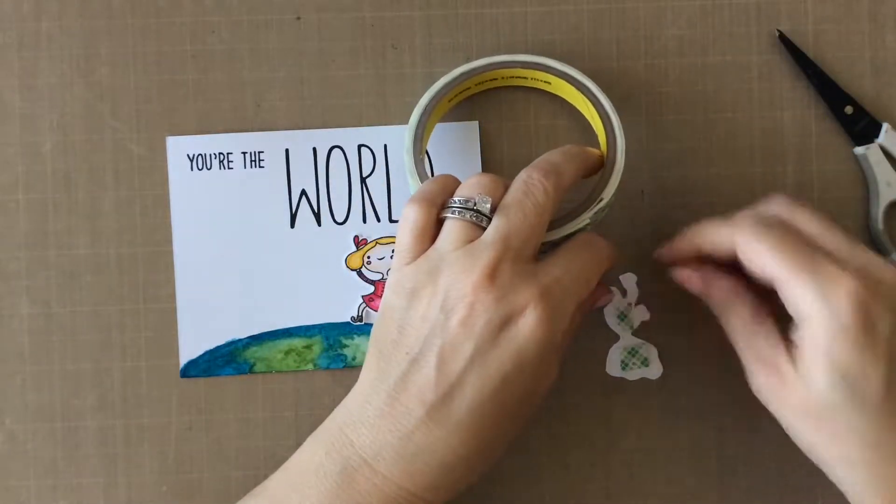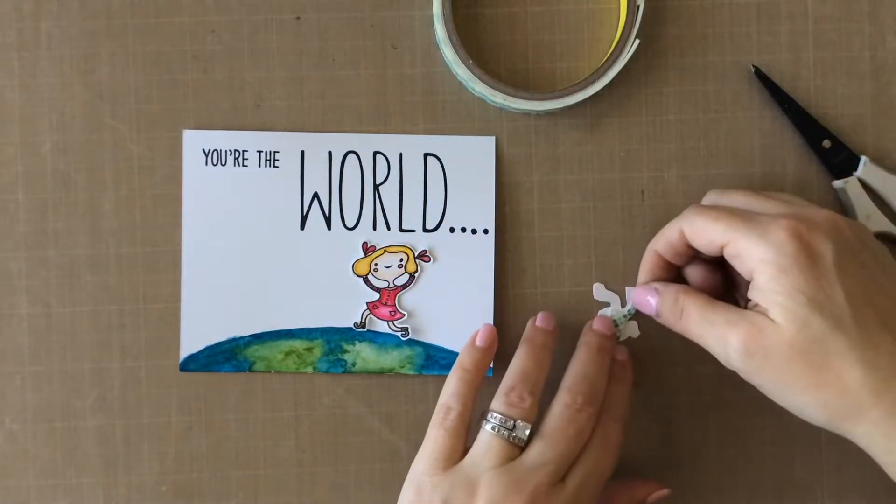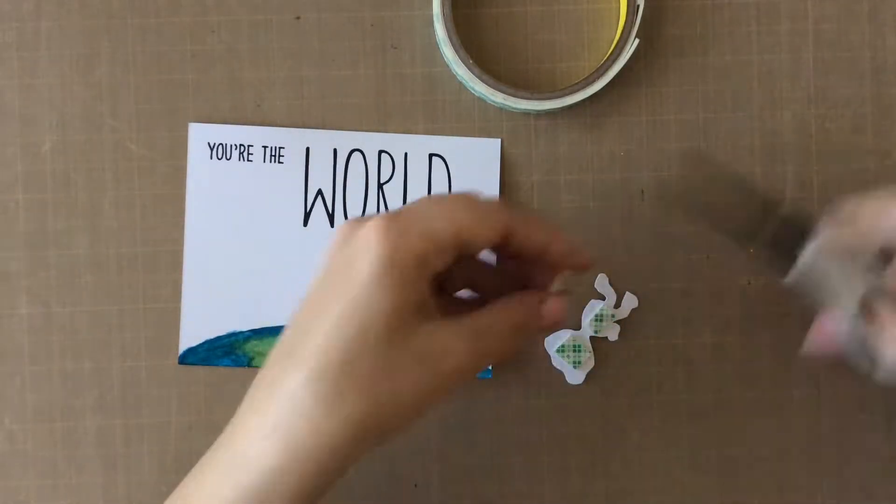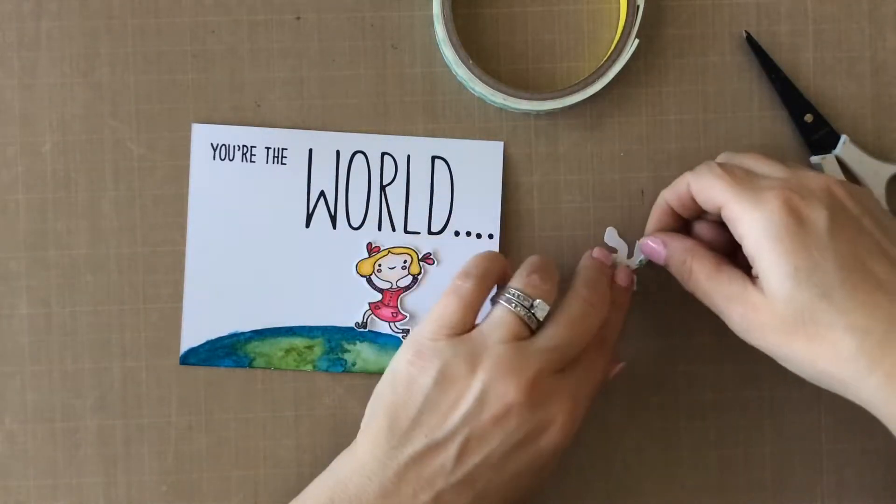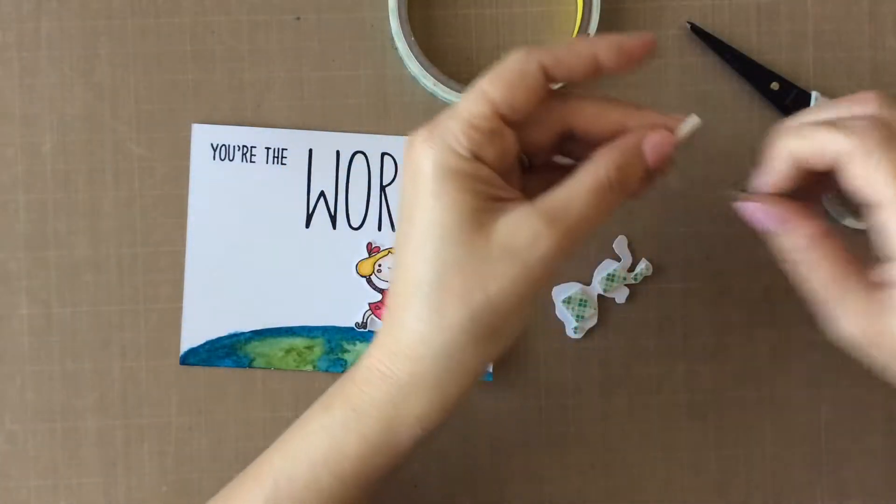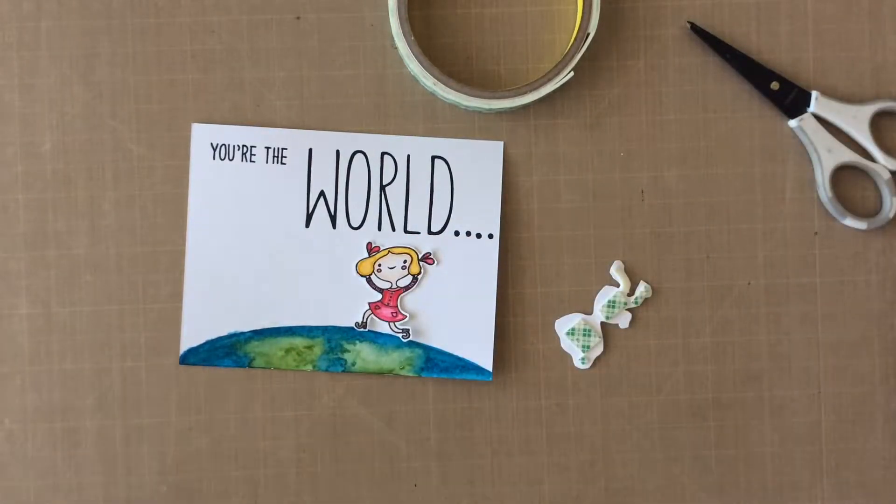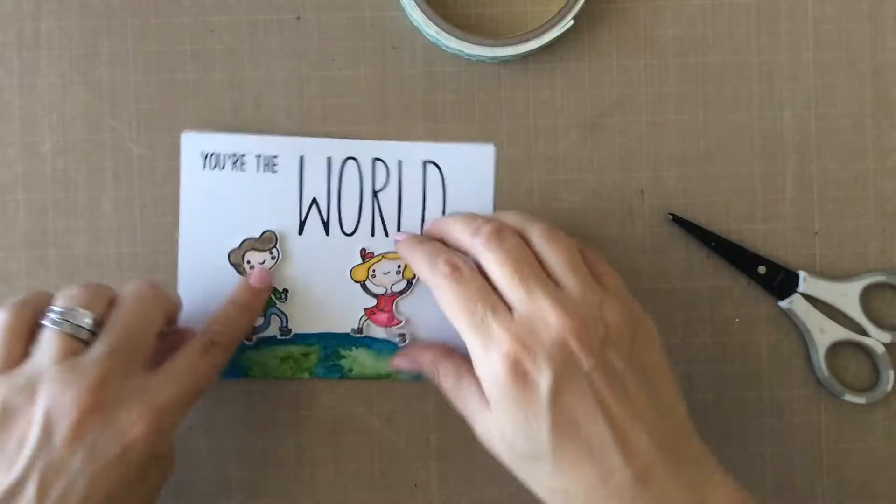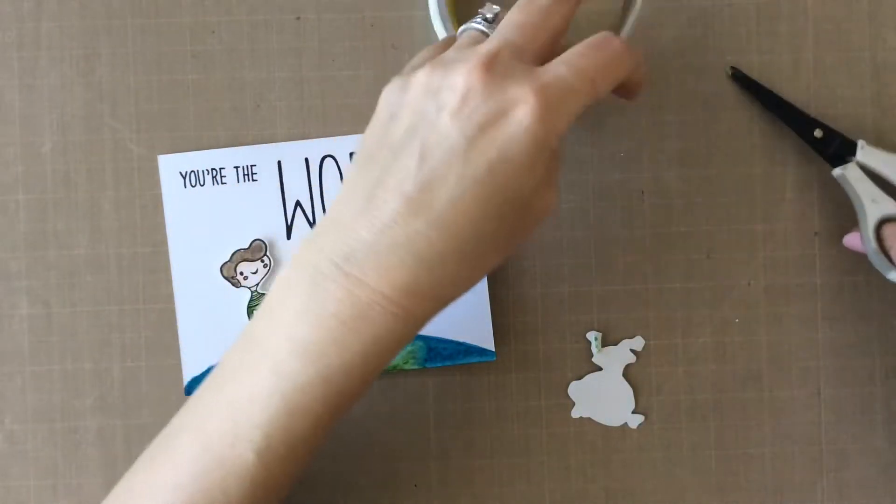Now I am getting dangerously low on this Scotch foam tape roll. Any of you that have seen this, when it comes, when you first purchase it, it is larger than your head. And here I am down to the very end. It makes me a little bit nervous. So I am adding quite a bit of foam tape because I want these characters to be popped up and not collapse in any of the areas. So you can see I actually add a ridiculous amount of foam tape here. But that's okay. I'll keep them nice and secure on the card as well. So here I am adding him on top of the world.